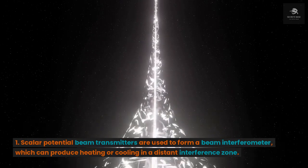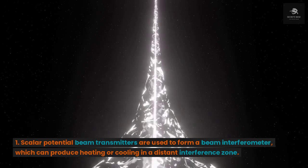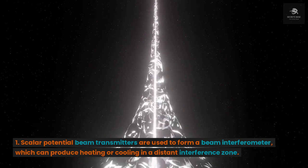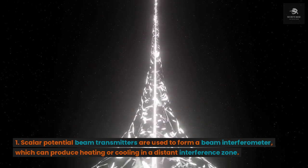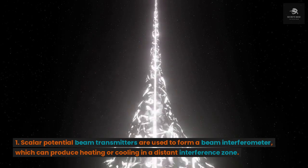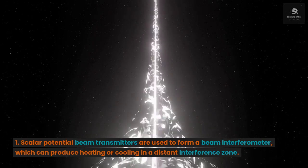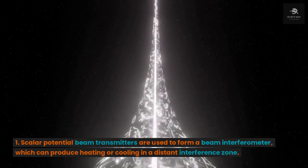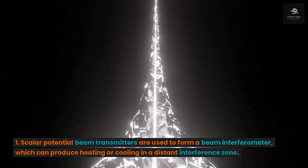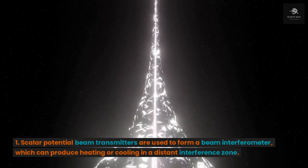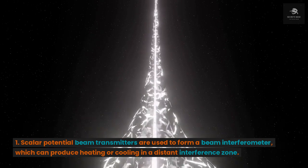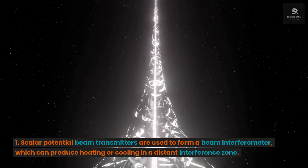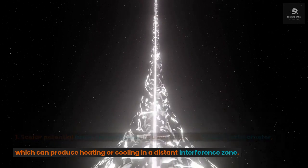Here's how weather engineering is usually accomplished: first, take two scalar potential beam transmitters separated on a baseline to form a beam interferometer and let them interfere at a distance. In that distant interference zone (IZ), there is an ambient vacuum potential or spacetime stress. If the electrical circuit grounds are biased above the ambient potential, scattering EM energy (heating) emerges — this is the exothermic mode. If biased negatively below the ambient potential, convergent EM energy cooling emerges — this is the endothermic mode.